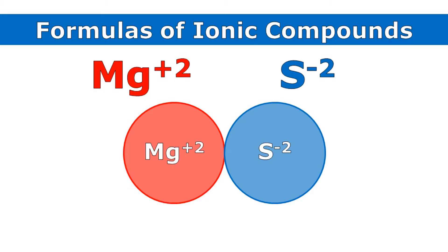Ionic compounds are made from ions that have charges, and positive ions and negative ions will join together until they cancel each other out and add up to zero. Here you can see an ion with a plus two charge and an ion with a negative two charge, and those two ions cancel each other out. The plus two and the minus two add up to zero. So for every one magnesium, I'll have one sulfide, and that makes my formula MgS.